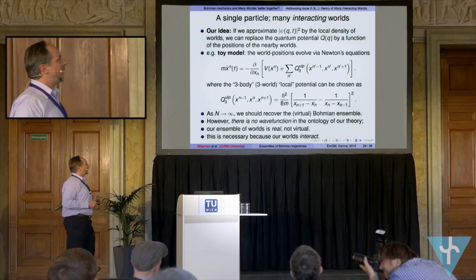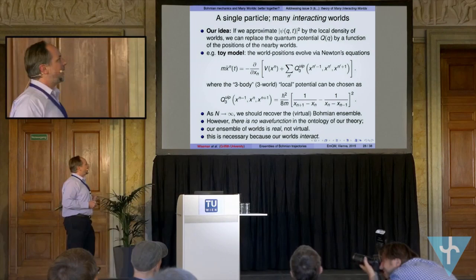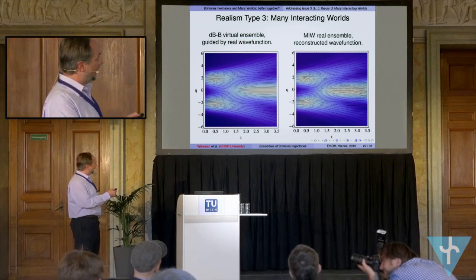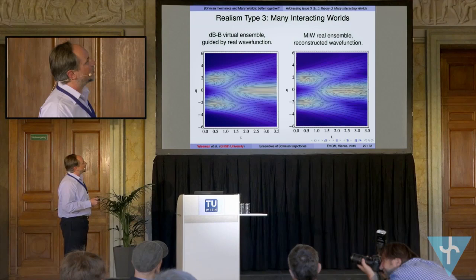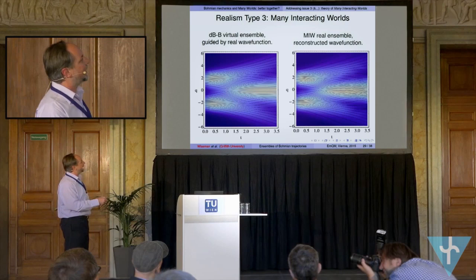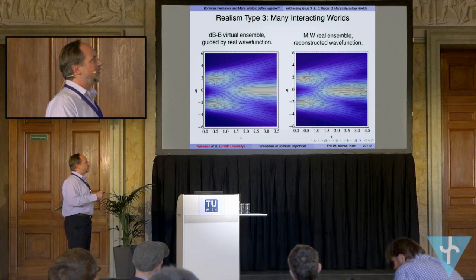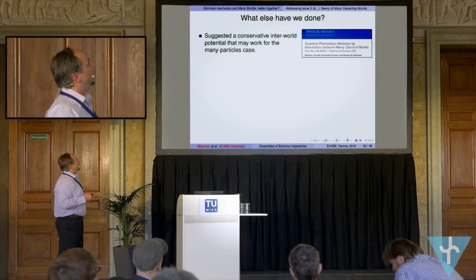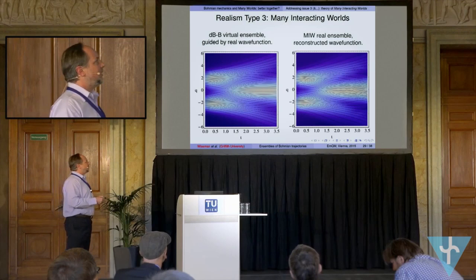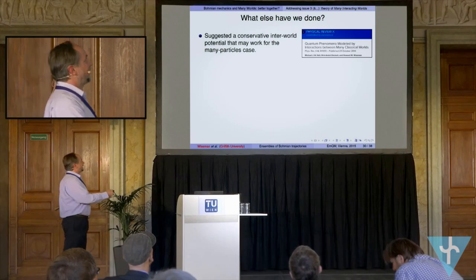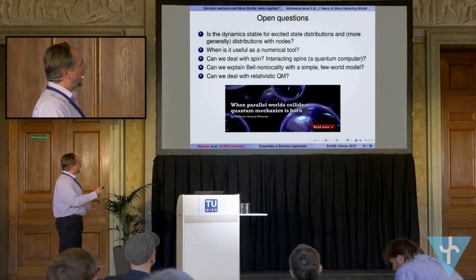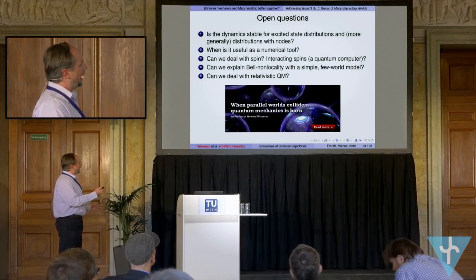Just to show that it does work at least qualitatively: this is the exact solution for Bohmian trajectories using the quantum wave function, and this is using no wave function at all — just an ensemble of trajectories interacting. There are little differences as you can see, but qualitatively it looks pretty similar, and this is only with an ensemble of 41 worlds. Those of you here two years ago would have seen that I had a similar plot, but the right-hand side looked much worse — we got better numerics, and so it is actually much better than it looked two years ago. We've done a bunch of other work and have a whole lot of open questions, but I'll finish with a recapitulation of everything I've talked about.